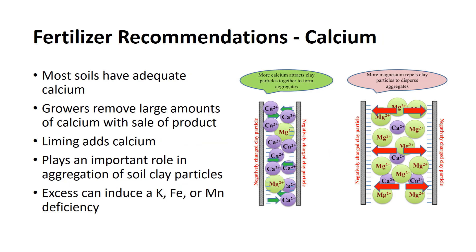Although most soils contain adequate amounts of calcium to support plant growth, growers should be aware that they are removing relatively large amounts of calcium with the sale of their product. Liming soils to maintain optimum pH adds large quantities of calcium and will be sufficient to make up for the loss. It should also be noted that calcium plays an important role in the aggregation of soil clay particles. Clay soils without adequate calcium are typically well-aggregated, permitting adequate aeration and drainage, which aids in the production of quality plants. Excess calcium in a soil can produce an imbalance of the cations and could induce a potassium, iron, or manganese deficiency, especially in soils low in these elements.